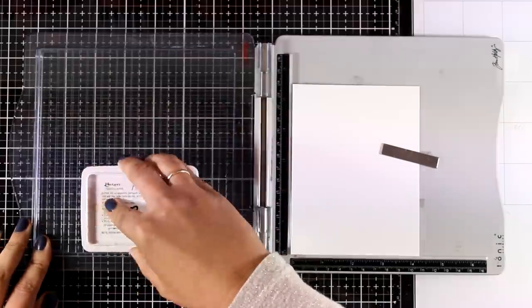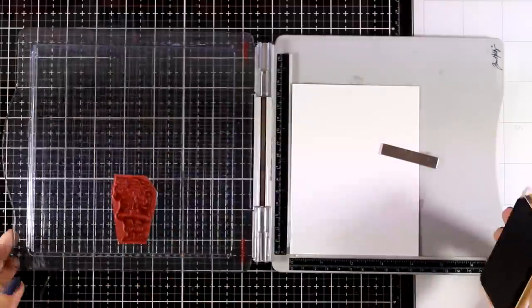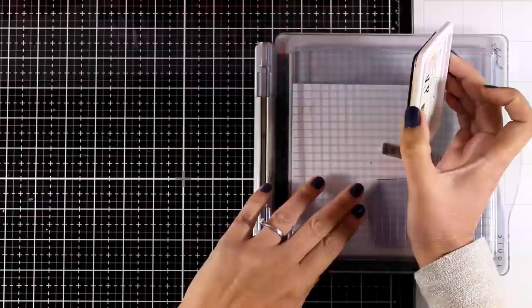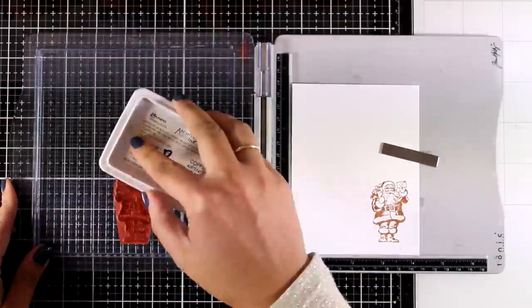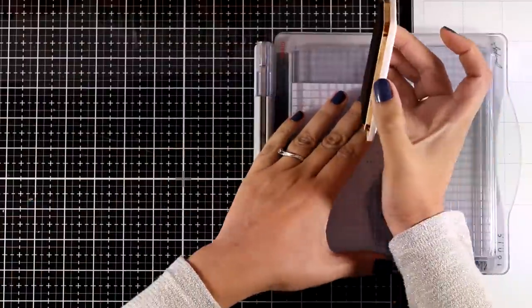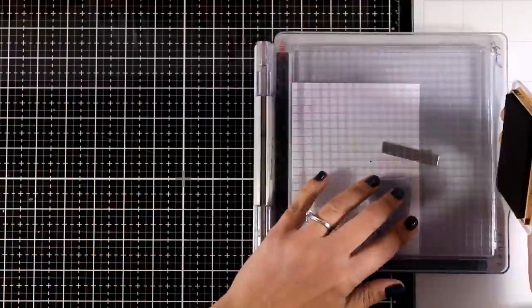So I'm going to start by stamping the Santa. For that I'm using Archival Ink in brown color. I am going to stamp a couple of times just because I decided that it wasn't quite dark enough for me.